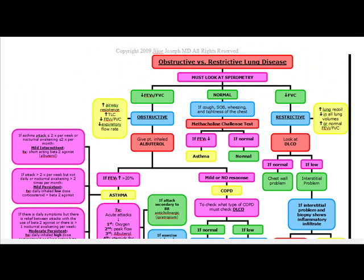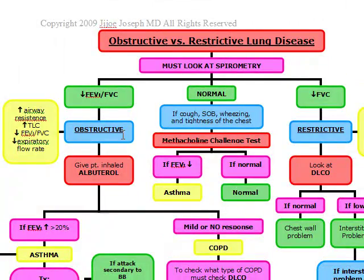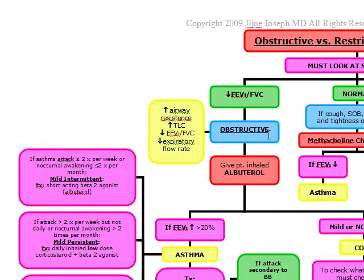Our next topic for discussion is obstructive versus restrictive lung diseases. The first measurement we want to look for is spirometry, specifically the FEV1 and the FVC. The FEV1 is the forced expiratory volume in one second, and the FVC is the forced vital capacity. A decreased FEV1-FVC ratio indicates an obstructive type of disease, which is characterized by increased airway resistance, increased total lung capacity, decreased FEV1-FVC ratio, and decreased expiratory flow rate.